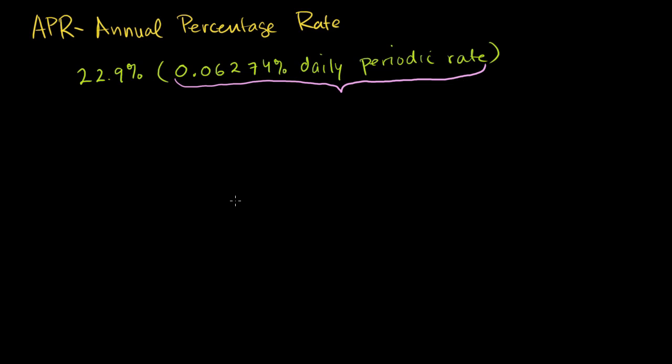Where do they get these numbers from? If you take 0.06274 and multiply by 365 days in a year, you should get 22.9. Let's verify that. Of course, both of these are percentages.